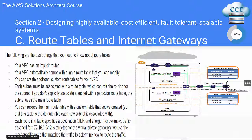Route tables and internet gateways also tie in with NAT addresses. A couple of things to note: your VPC has an implicit router and automatically comes with a main route table which you can modify. There's also a custom route table — you can create custom route tables for your VPC, and each subnet must be associated with a route table which controls the routing for that subnet.